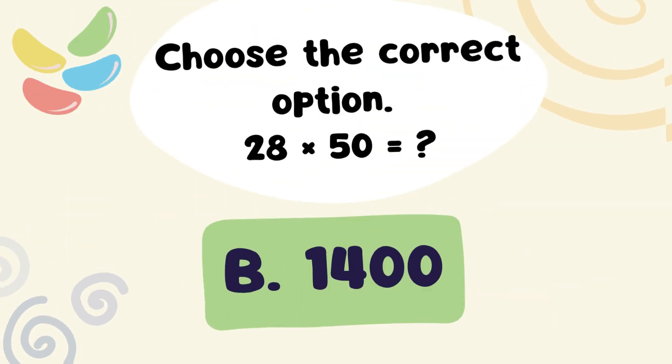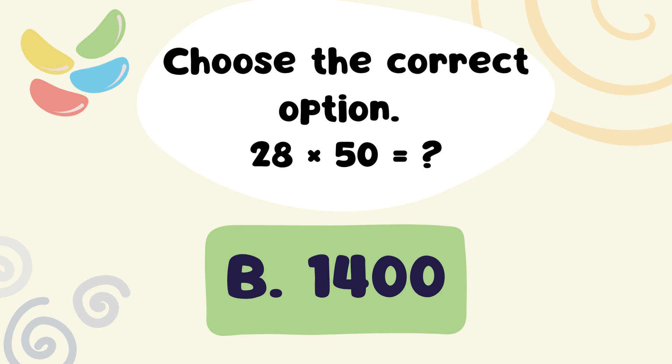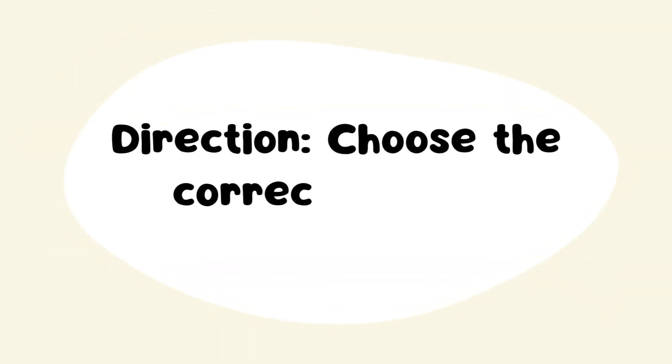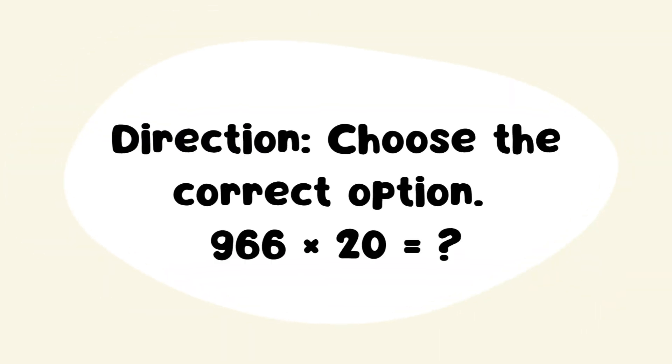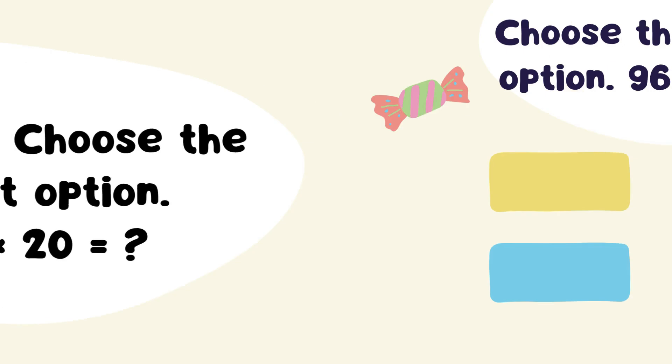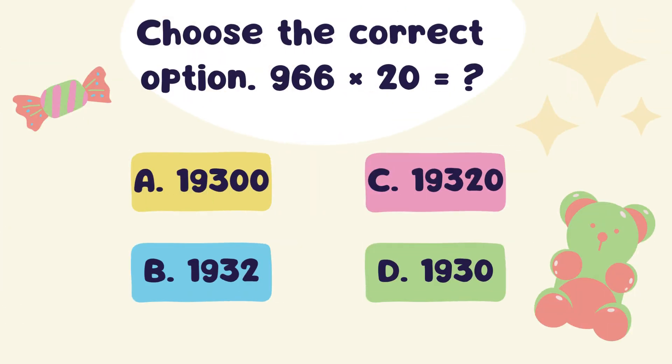The right answer is Option B. 1400. Next Question: Choose the correct option. 966 x 20 is equal to?